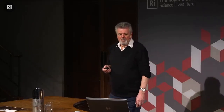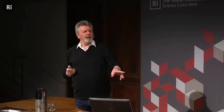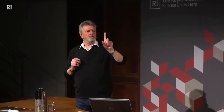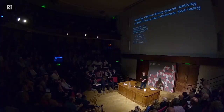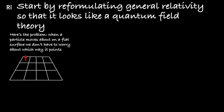If you're not familiar with the mathematics, you might say 'oh, that's easy, I could do that over breakfast.' Let me tell you, it's not easy. Here's the problem: when a particle moves about on a flat surface, we don't have to worry about which way it points. Physics is full of things called vectors — an electron has a spin that points up or down in a magnetic field. So if I have a particle pointing upwards and I move it about on a flat surface, the way I move it won't affect the way it's pointing. But in general relativity, spacetime can be curved — and here's the ultimate curvature: a sphere.